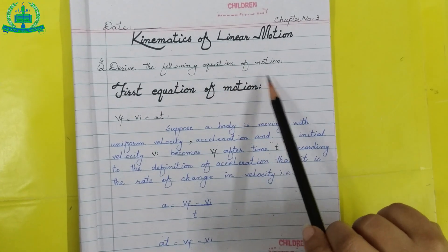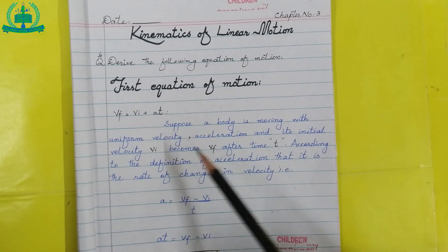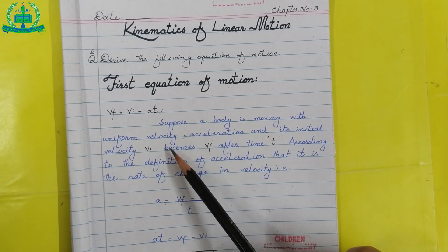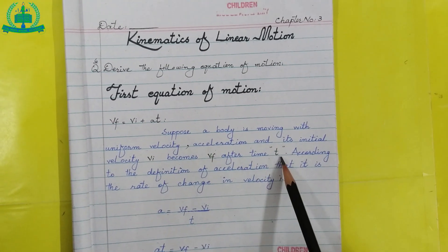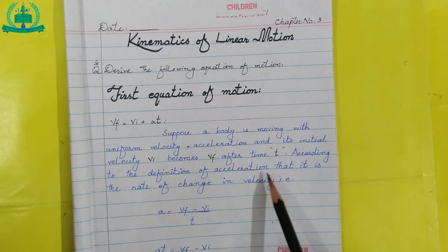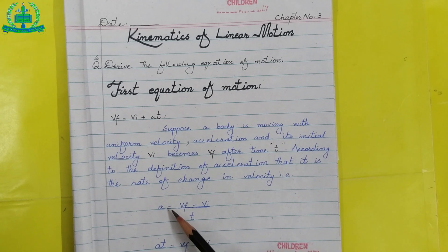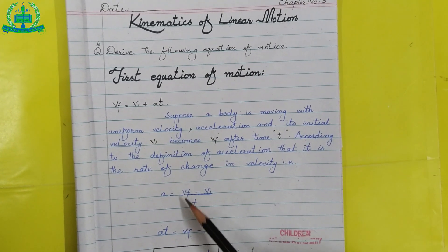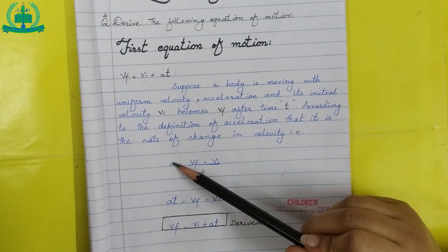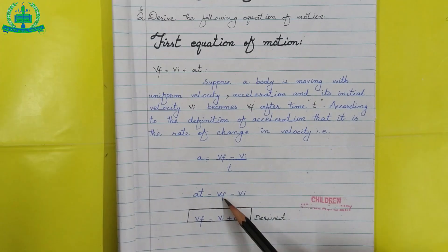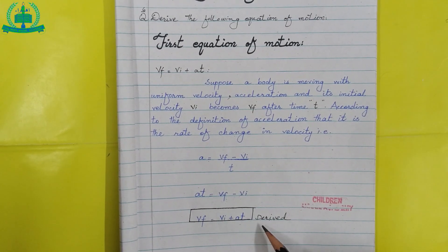Derive the following equation of motion. First equation of motion: vf is equal to vi plus at. Suppose a body is moving with uniform acceleration and its initial velocity vi becomes vf after time t. According to the definition of acceleration, it is the rate of change in velocity: acceleration equals vf minus vi upon t. Cross multiplying, at equals vf minus vi, so vf equals vi plus at. Hence the first equation is derived.